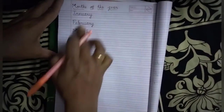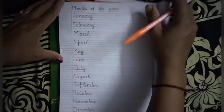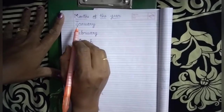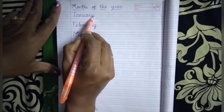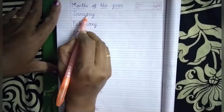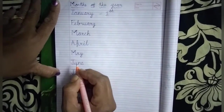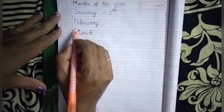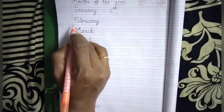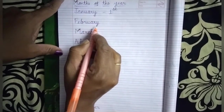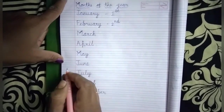So, students, these are our twelve months of the year. Now we repeat again. First month is J-A-N-U-A-R-Y, January. And January is our first month of the year. The next month is F-E-B-R-U-A-R-Y, February. And February is our second month of the year.